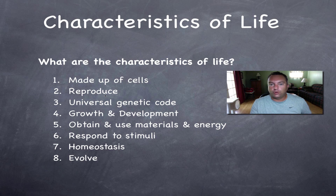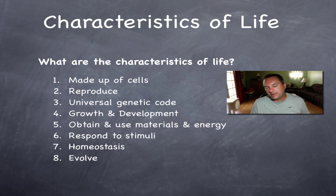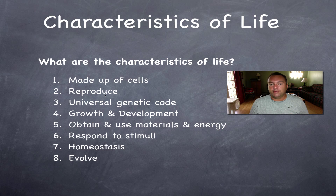This is the fourth screencast from chapter one, covering the characteristics of life. There are eight of them we're going to go over in detail. Your textbook may be different than the one I use, but what you see on this list is pretty much universal no matter where you are studying biology from.